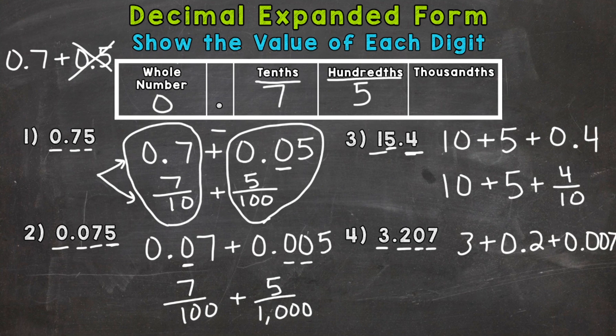A common mistake for number four would be three plus two tenths, and then writing the seven in the hundredths place. You need to be very careful with placeholder zeros and what place the numbers are sitting in. So that seven has to be in the thousandths. So this would be incorrect. All right.